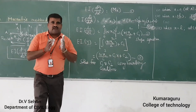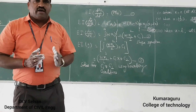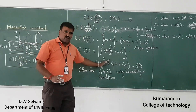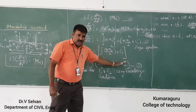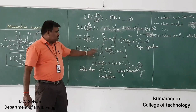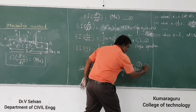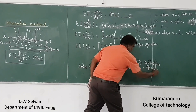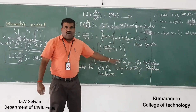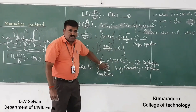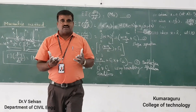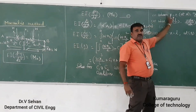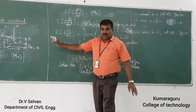Our aim is now to determine the constants C1 and C2 in the slope and deflection equations. Once you are able to calculate C1 and C2 — the constants of integration — you substitute them back into the slope and deflection equations. These constants depend upon the boundary conditions.